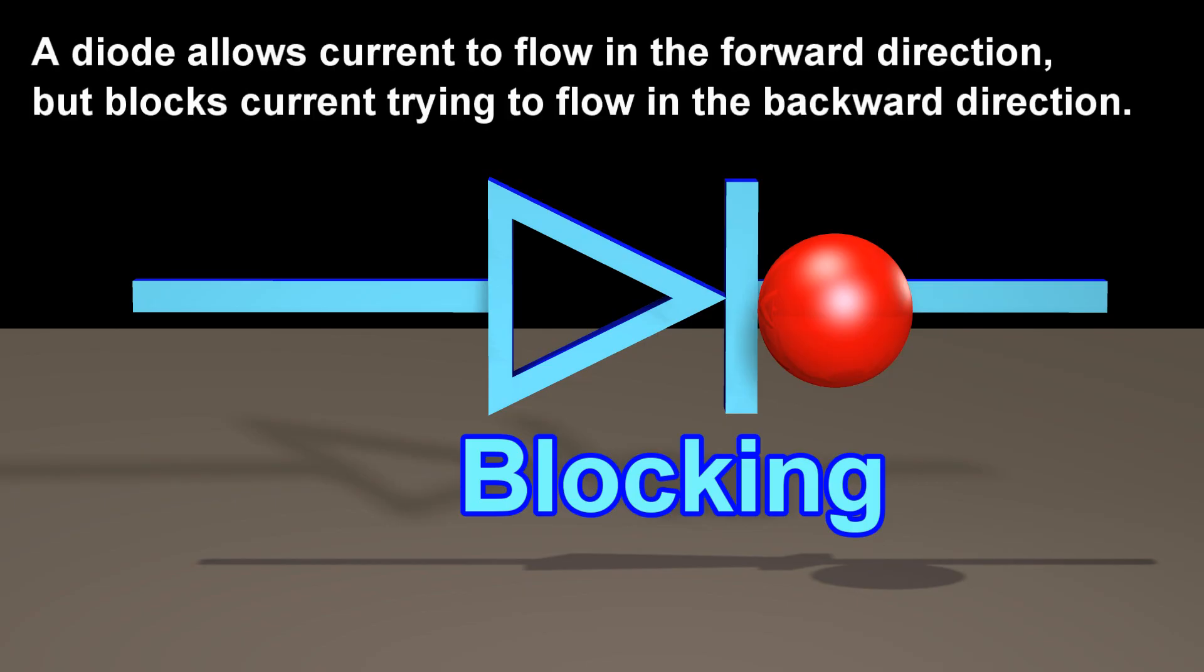A diode allows current to flow in the forward direction, but blocks current trying to flow in the backward direction.